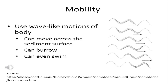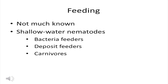Nematodes move by making wave-like motions of their body. This allows them to move across the sediment surface, burrow, and a few of them can even swim. Not much is known about the feeding of deep-sea nematodes. In shallow water we know that some eat bacteria, many are deposit feeders, and a few are carnivores. We make the assumption that the members of the deep-sea nematode fauna are doing sort of the same thing.